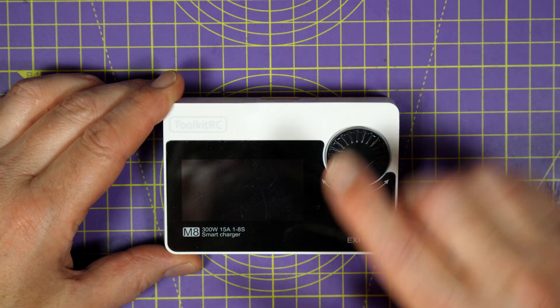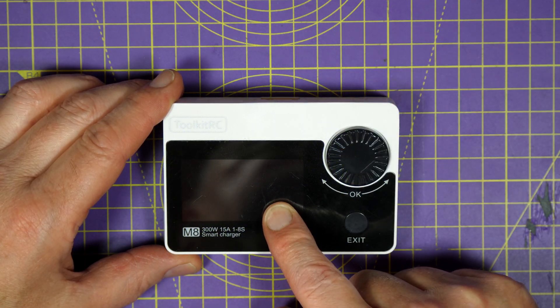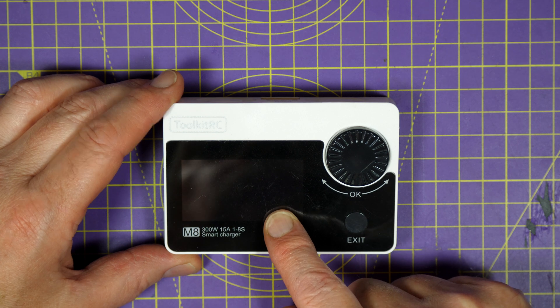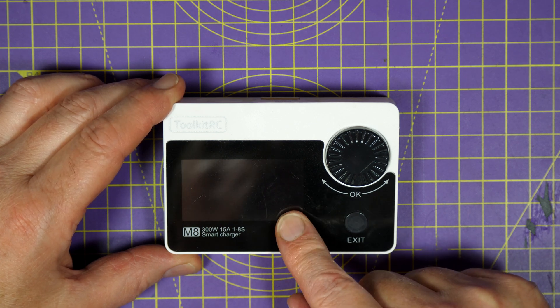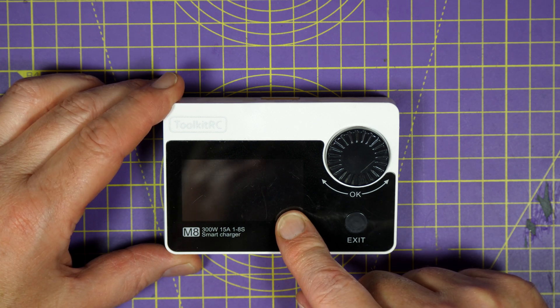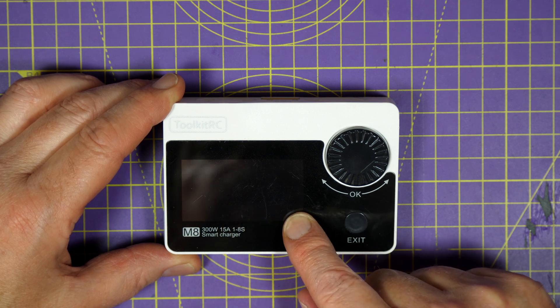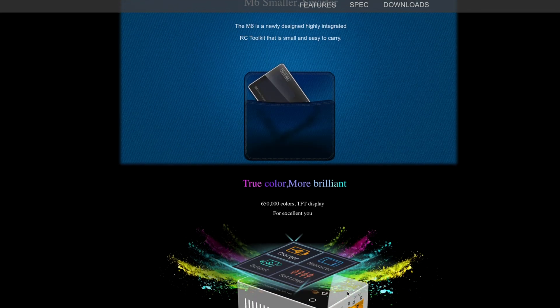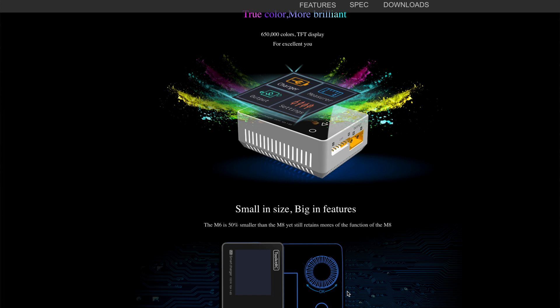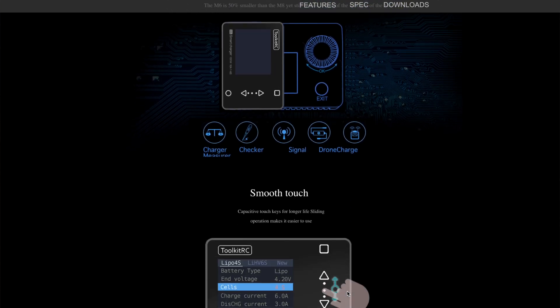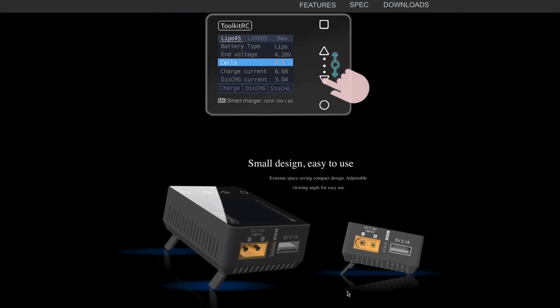About a year ago, I reviewed this Toolkit RC M8 300W Smart Battery Charger, which was the first portable charger that they released. And a few months later, they released an even smaller 150W version called the M6, which was great, but it did suffer some poor balance port electronics.